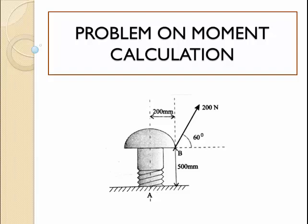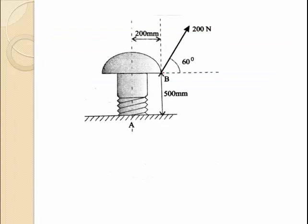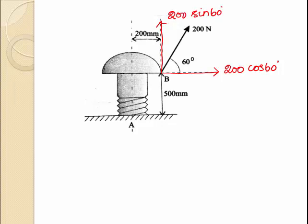Here is the problem statement: find the moment of a 200 Newton force acting at point B about point A as shown in the figure. At point B, a force with a magnitude of 200 Newton is acting in the first quadrant with a horizontal inclination of 60 degrees. We can convert this force into two components: one along the horizontal direction, 200 cos 60, and one along the vertical direction, 200 sin 60.